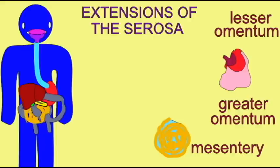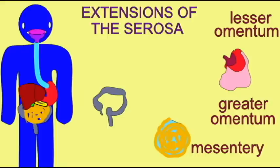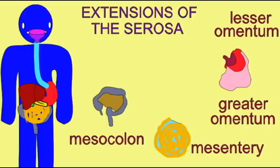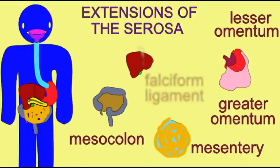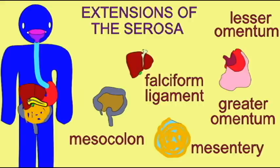There is a mesocolon which attaches to the large intestine and binds it to the parietal peritoneum. Finally, there is a falciform ligament from the liver to the anterior abdominal wall and the diaphragm. These extensions of the serosa help to anchor the various organs of the GI tract.